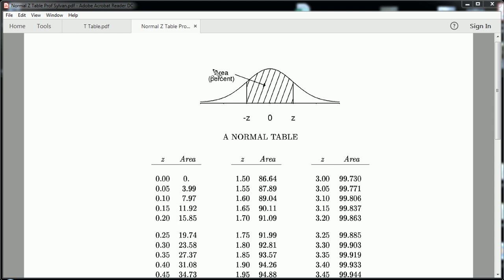As you can see, often times these tables have a picture at the very top, which explains with very little words how the table itself works. So the way this table, this particular Z table works, is that it gives you the area between a negative and positive Z value.